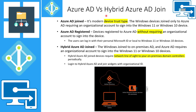These are the main differences between Azure AD and hybrid Azure AD — an overview of different device trust types. Azure AD joined is the modern device trust type and is personally recommended. Windows devices joined only to Azure AD require an organizational account to sign into Windows 11 or Windows 10. Azure AD registered devices are not part of the organization — mostly personal devices enabling a BYOD scenario. These devices are not fully managed; users can log in with a personal Microsoft account or local account, giving the organization very little control.